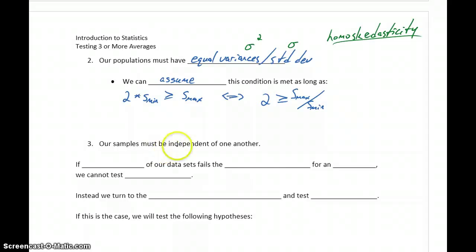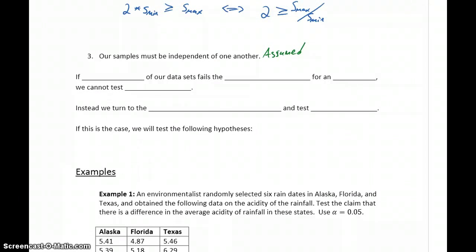And then we have a last condition: our samples must be independent of one another, and for our purposes, that'll be assumed. We'll have those first two conditions to verify in order to use the ANOVA test.